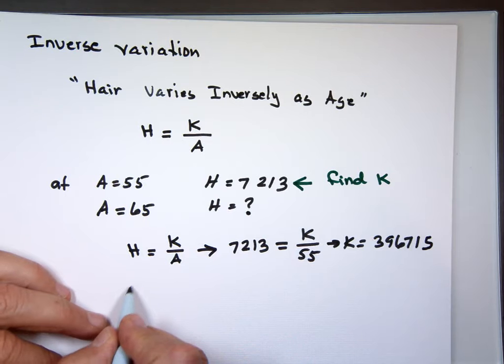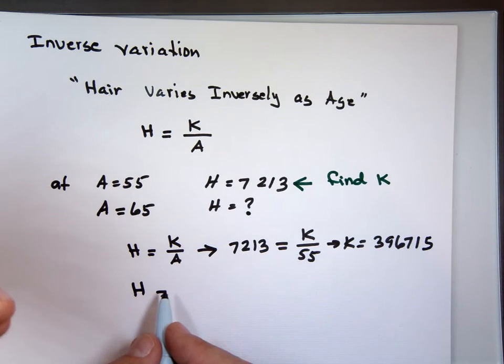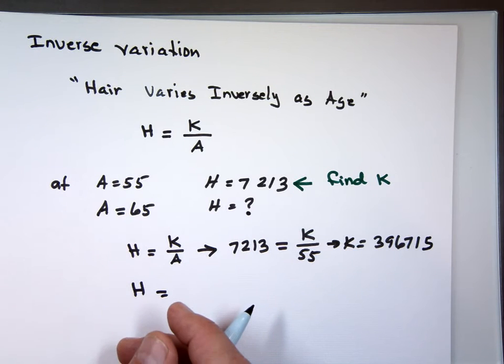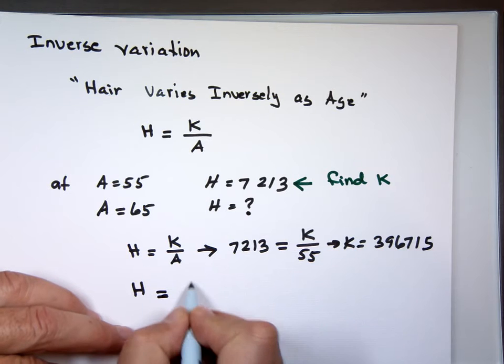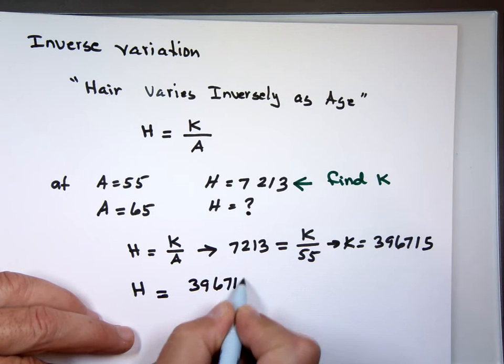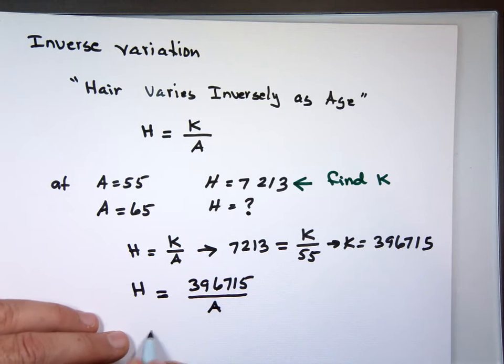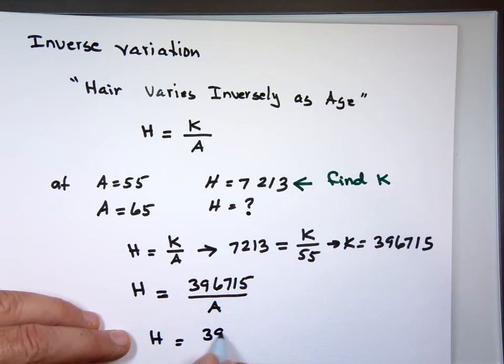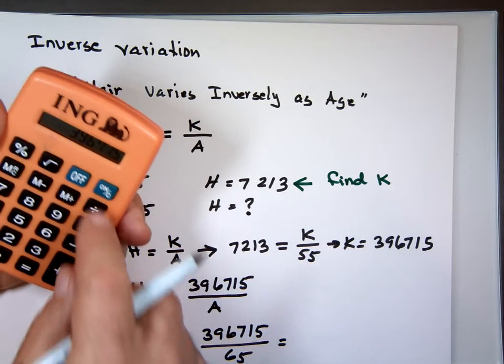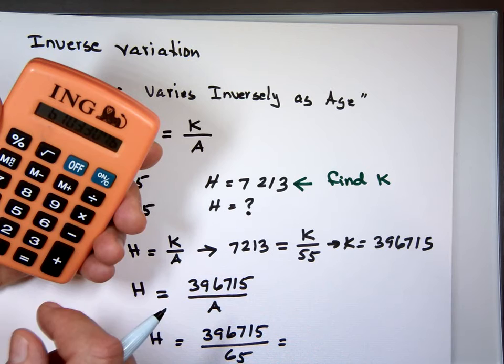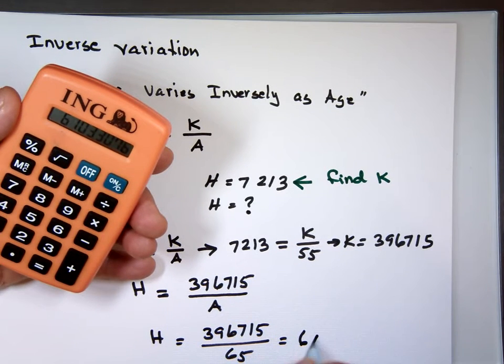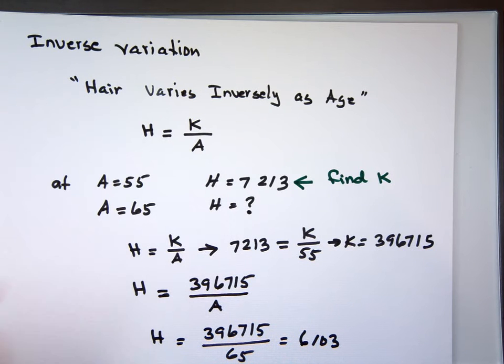So the equation that describes the hair on my head - just my own, can't be yours now because my wife didn't count the hair on your head, she counted the hair on my head - so it will be what? 396,715 divided by the age. So at 65, let's see how many hairs I'm going to have. I'm going to be down to 6,103 hairs, from 7,213. I lost a thousand of them. One-seventh of my hair is gone. So that's inverse variation.